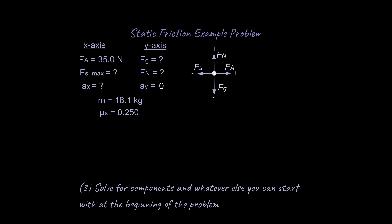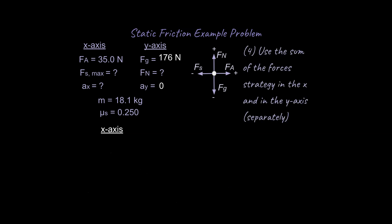So we have our known values and one quick thing that we can solve for is our force due to gravity, right? We don't know what our force due to gravity is, but we do know what our mass is and we do know what gravitational acceleration is. So we can just plug in our numbers and get our force due to gravity. That's helpful and we will update our known information up at the top and then we're ready to move on and use the sum of the forces strategy.